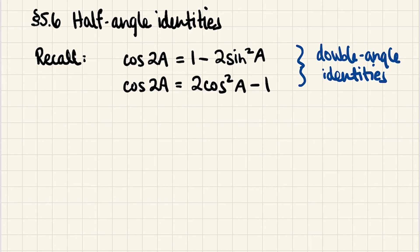What we're going to do to uncover these half angle identities is take each of these two double angle identities in turn, and isolate either sine or cosine of a, which will give us a particular form of that identity in terms of cosine of 2a, and then we're just going to cut the angle a in half on both sides, and voila, we will have our half angle identities.